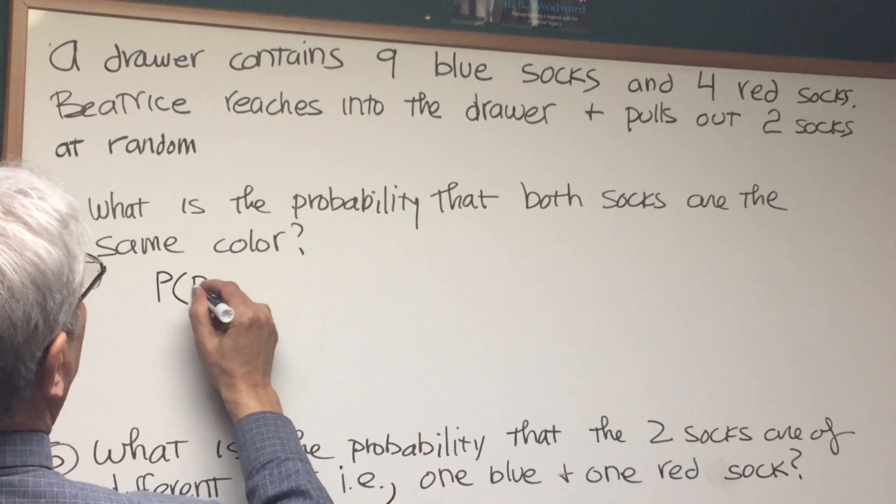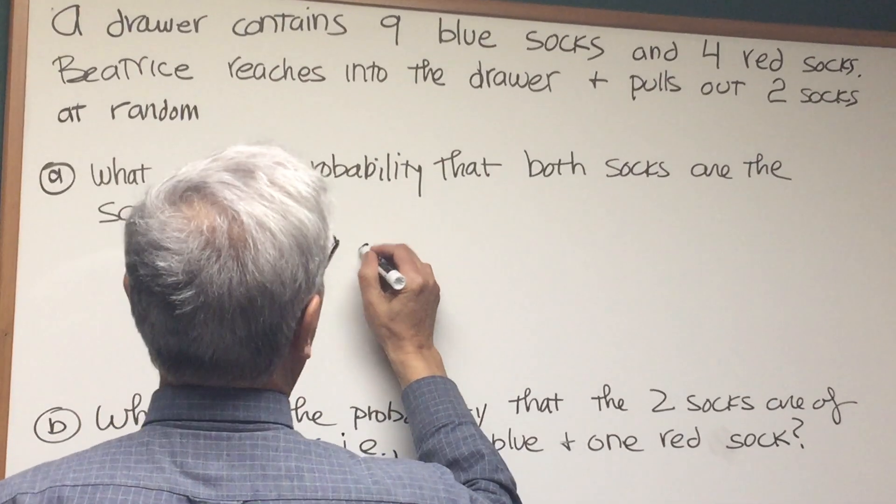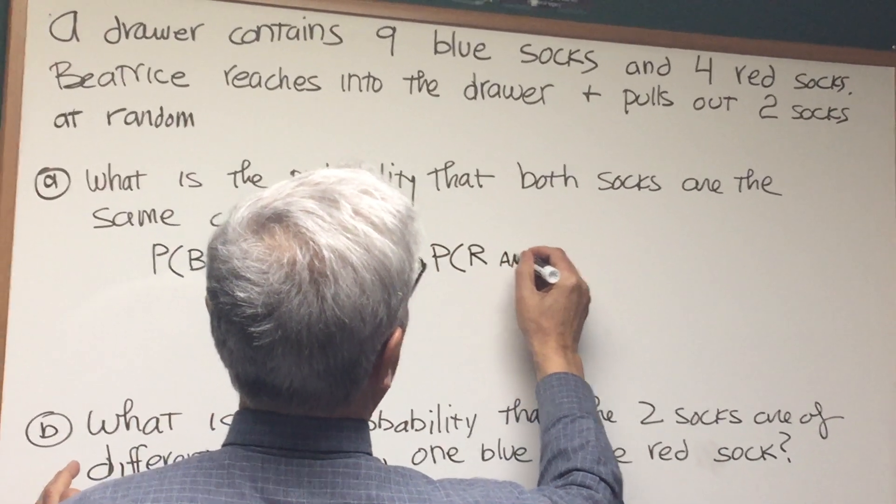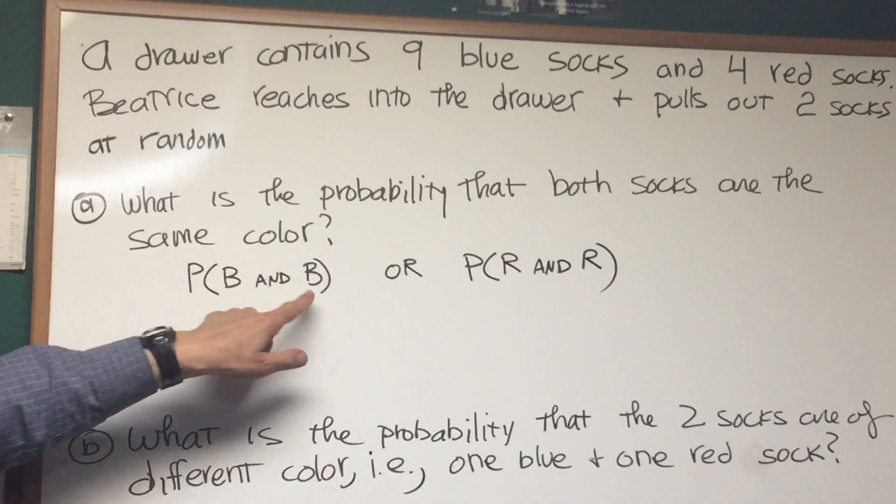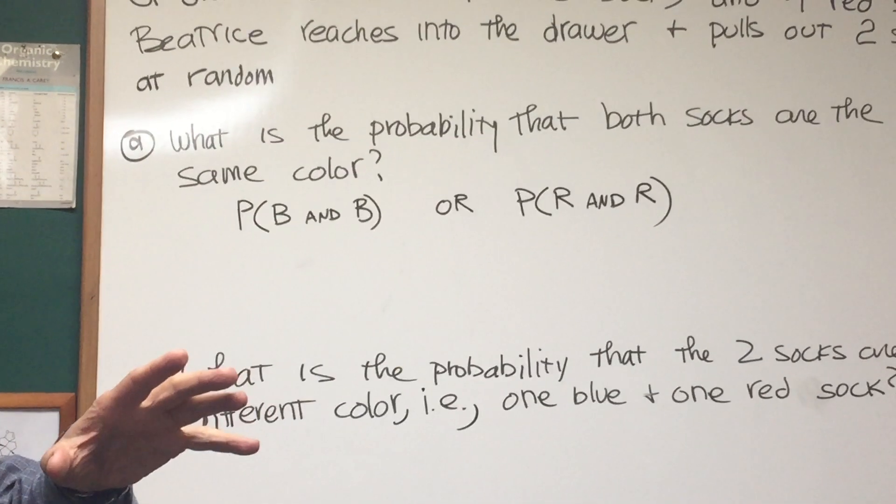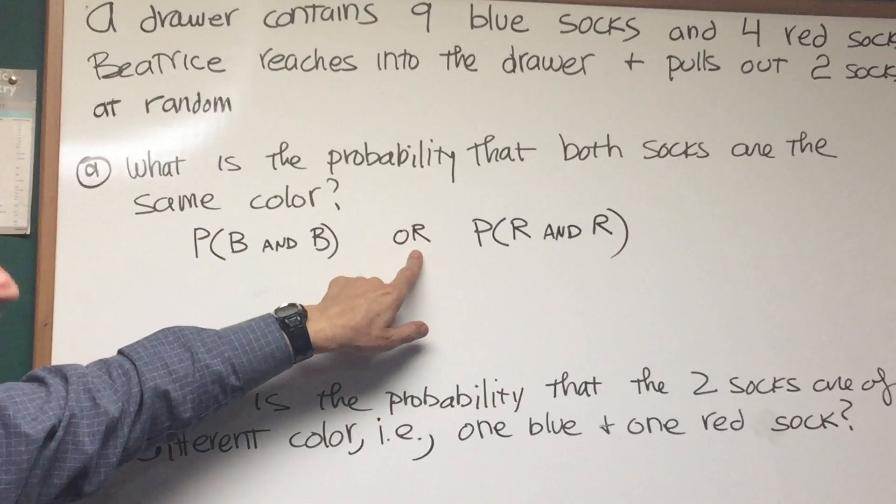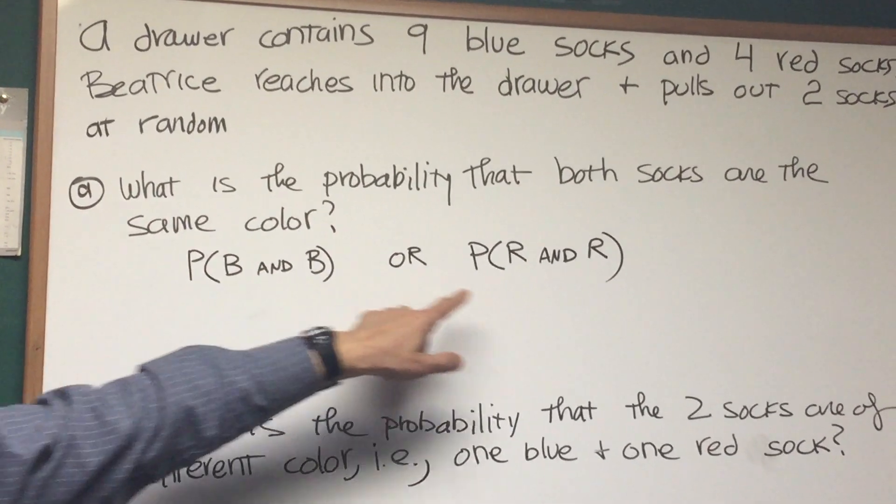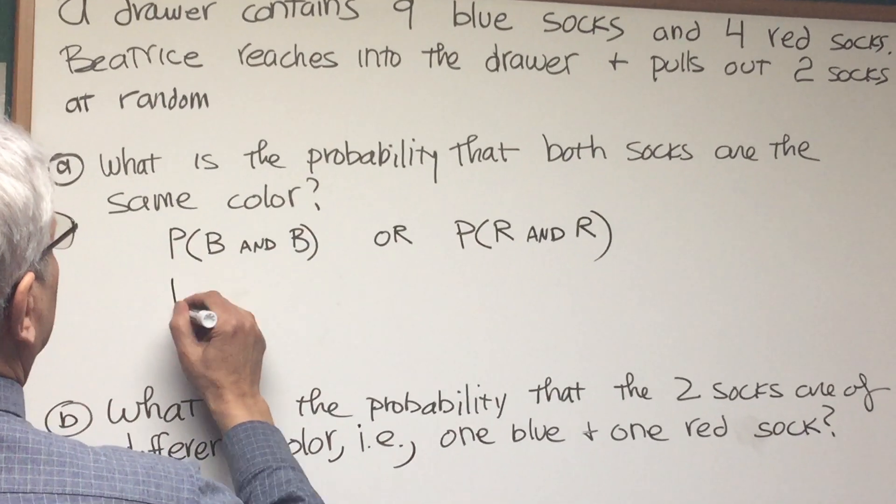That's two socks of the same color or the other outcome is probability of red and red. So let's fill in the details. When we're looking for the occurrence of two events in sequence, we're going to use the product of probabilities. And when we're looking for one event or another, we're going to use the sum of probabilities. So AND in this probability problem is going to turn into a product of probabilities and OR is going to turn into a sum. Okay, so let's go ahead of this.